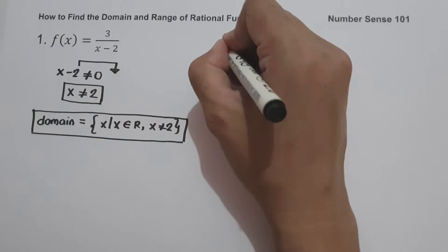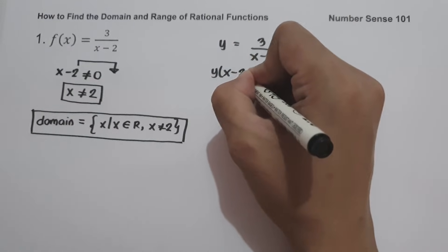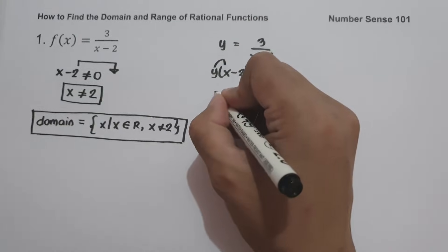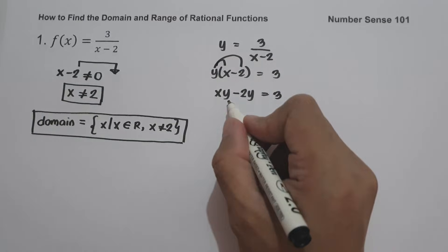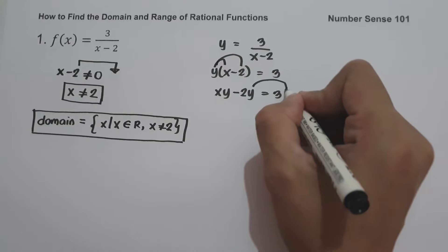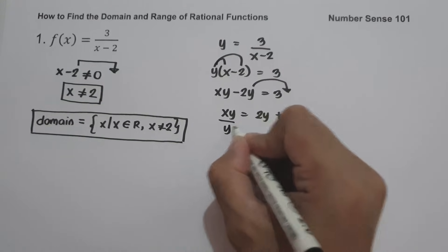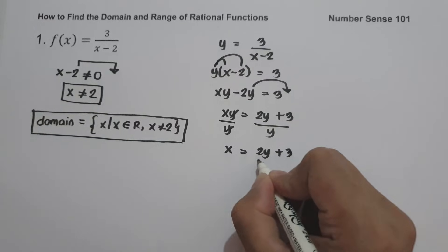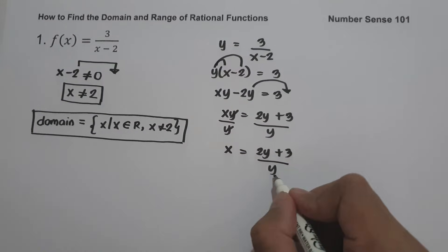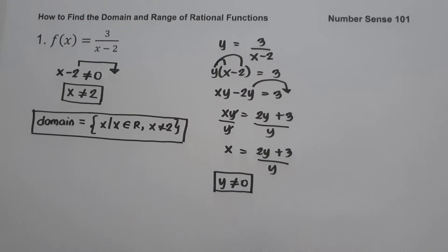To find the range, rewrite as y = 3/(x - 2). Multiply y by (x - 2): xy - 2y = 3. Express in terms of x: xy = 2y + 3, then divide both sides by y, giving x = (2y + 3)/y. To find the range, equate the denominator not equal to 0: y is not equal to 0, which would give undefined.